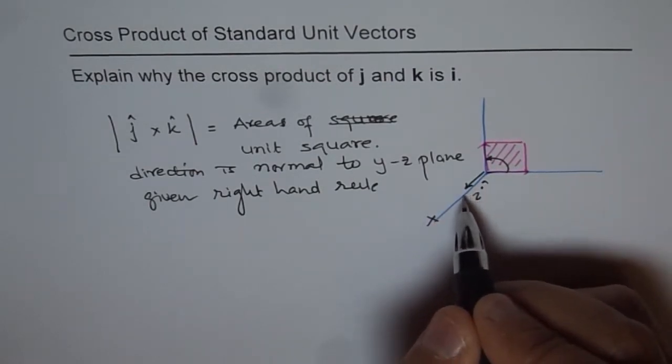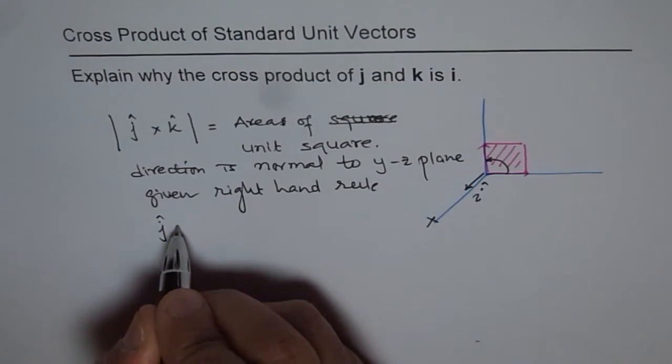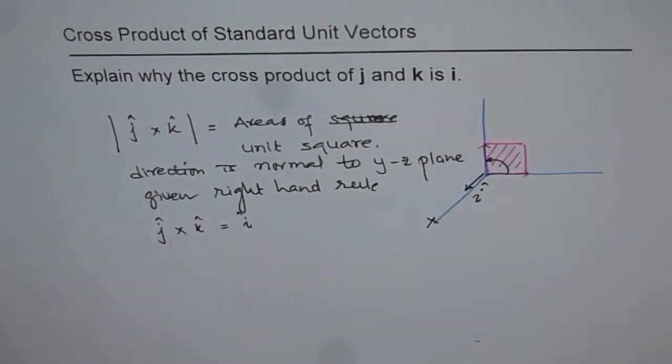And that's how, by definition, we get vector j cross vector k equals to vector i. I hope this point is absolutely clear in these few statements. Thank you.